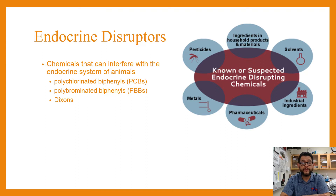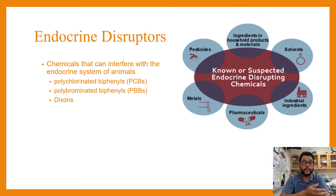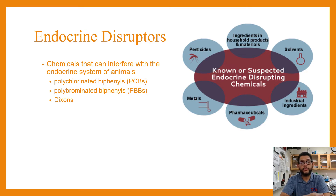These chemicals in the environment tend to be either PCBs or polychlorinated biphenyls, dioxins, or polybrominated biphenyls (PBBs). These can come from different sources such as solvents, pesticides, metals, and pharmaceuticals, and they can end up interfering with the process of hormone production or hormone receiving.